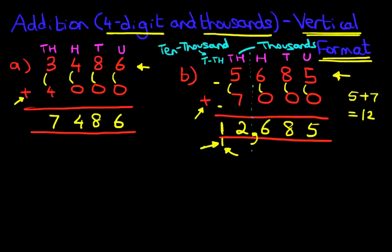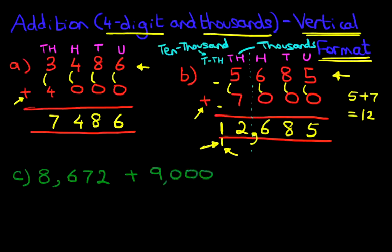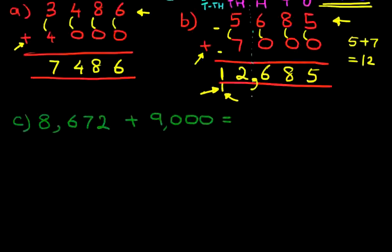Twelve thousand, six hundred and eighty-five. Let's look at one more example. This one we're going to write in the horizontal format. So imagine you're in a test at school or at home and you see this on your worksheet — you have to work out the answer, but the question also says you have to show your workings in the vertical format. The first step is to rewrite the question in columns.